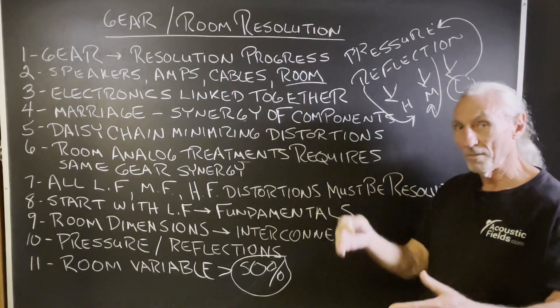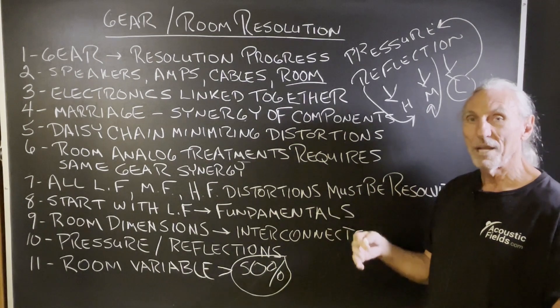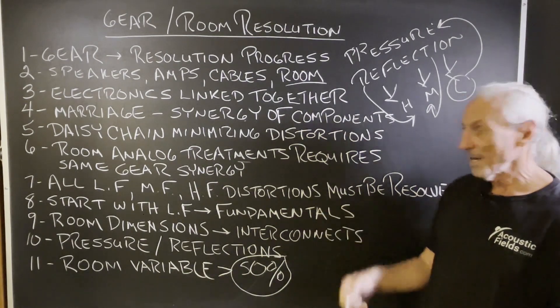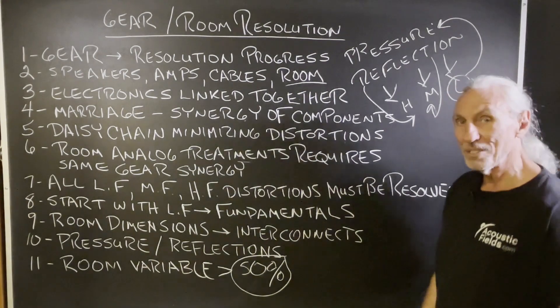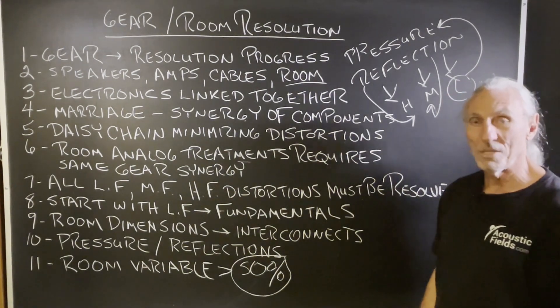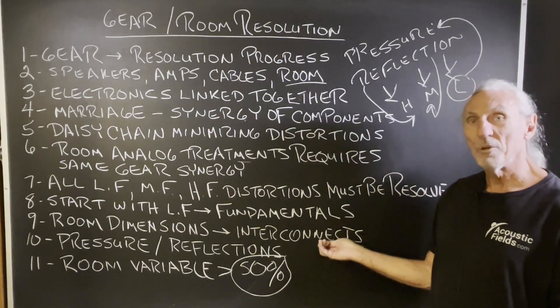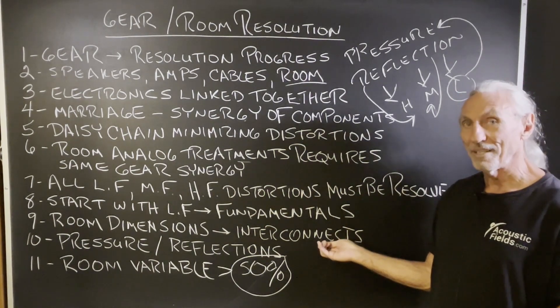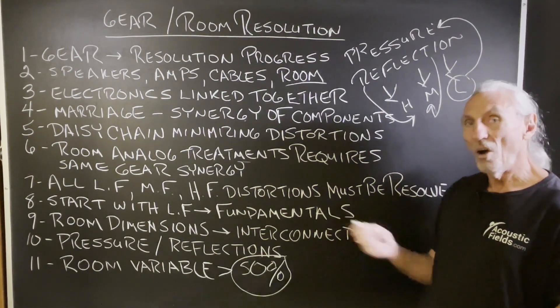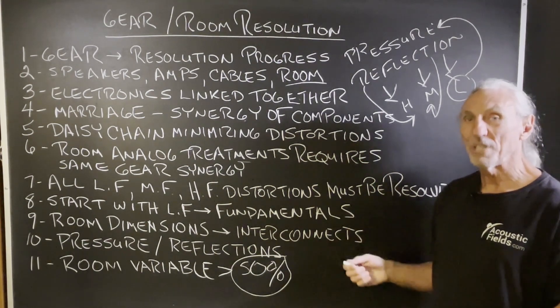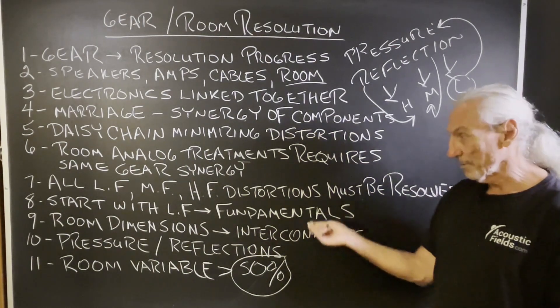We have amplifiers, we have speakers, we have interconnects between the preamp and the amp. We have interconnects between processors and amplifiers. So all the distortion in these components, if you will, have to be resolved so they work together. Think of room dimensions as the interconnect. The width, the height, and the length all must work together to produce less distortion. So that's the big benefit of a new build because you can control those variables.